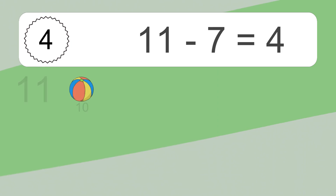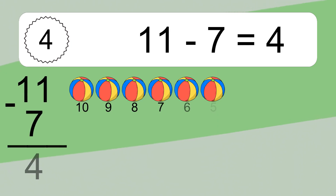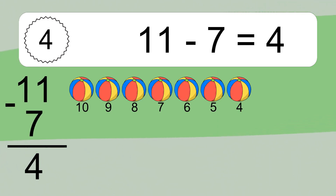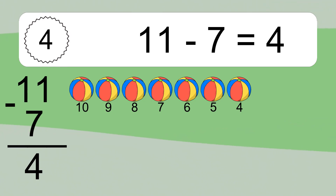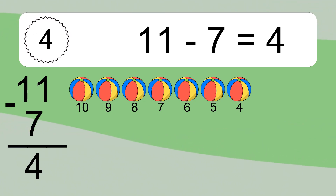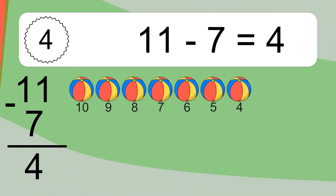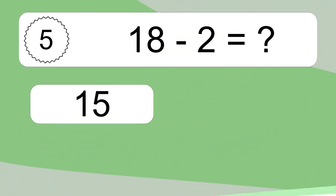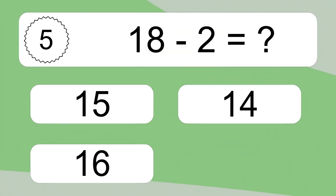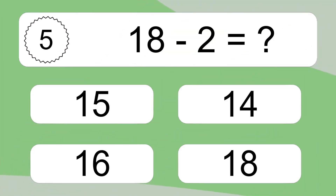11 minus 7 equals what? 11 minus 7 equals 4. Let's count it! 10, 9, 8, 7, 6, 5, 4.